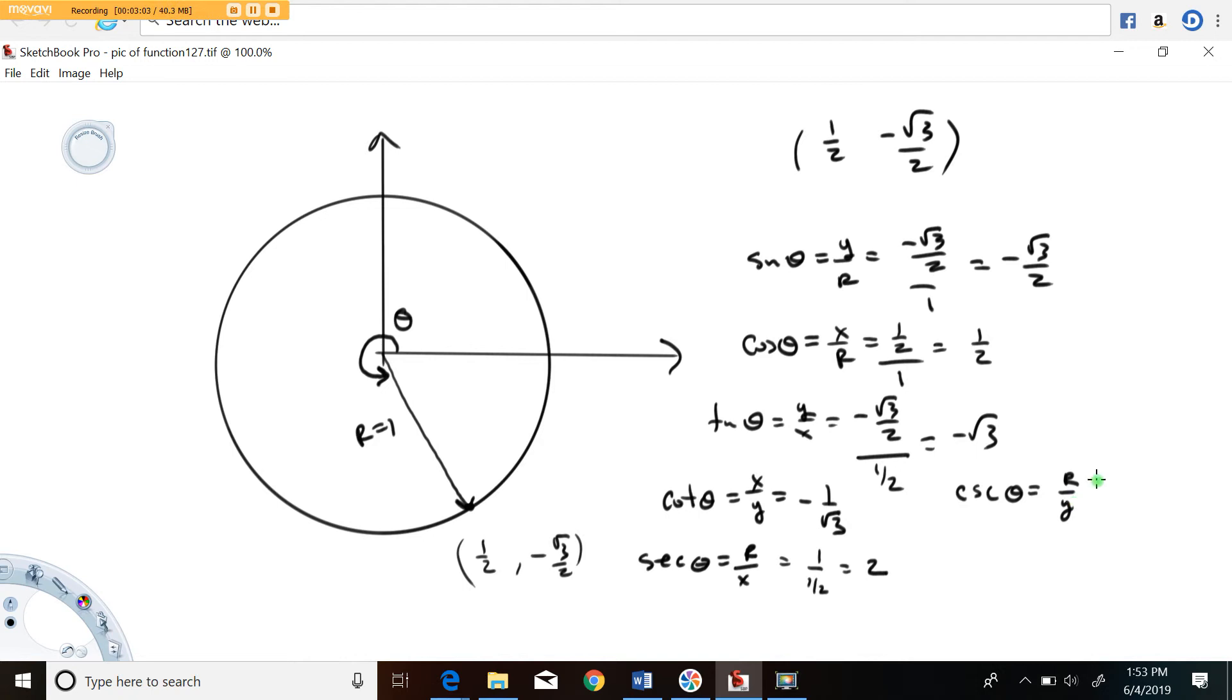In this example, r is one, and y is minus root three over two. So cosecant theta is equal to, if we simplify that, minus two over root three. You could rationalize that if you so desire, but I wouldn't bother.